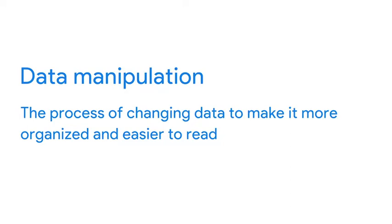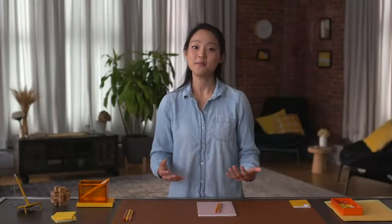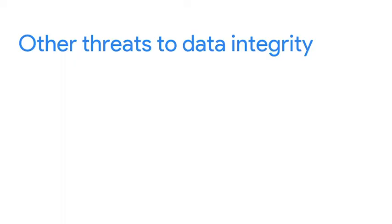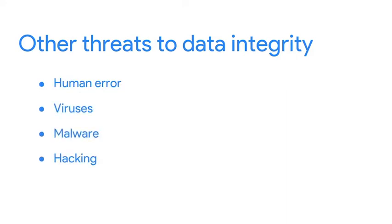The data manipulation process involves changing the data to make it more organized and easier to read. Data manipulation is meant to make the data analysis process more efficient, but an error during the process can compromise that efficiency. Finally, data can also be compromised through human error, viruses, malware, hacking, and system failures, which can all lead to even more headaches.